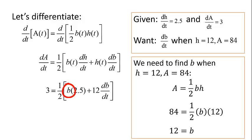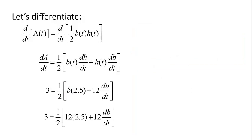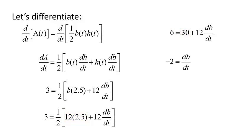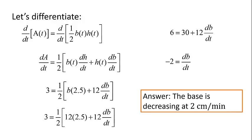Let's plug that into our equation. All that remains is to solve for dB/dt. We can multiply both sides by 2 and note that 12 times 2.5 equals 30. A little algebra yields that dB/dt equals negative 2. We got a negative answer — is that okay? Yes, it is. If our rate of change is negative, that simply means that the quantity is decreasing. So our final answer is that the base of the triangle is decreasing at a rate of 2 centimeters per minute.